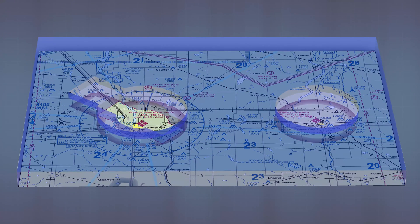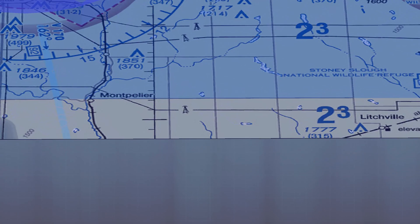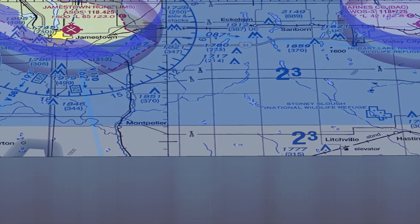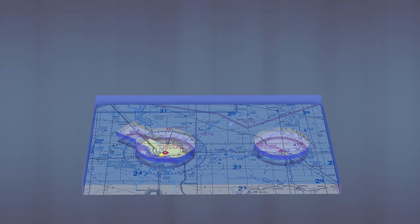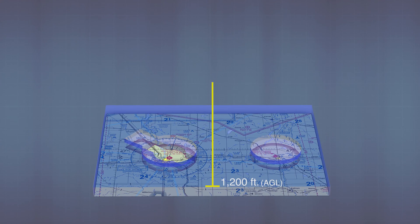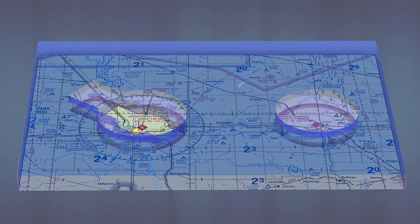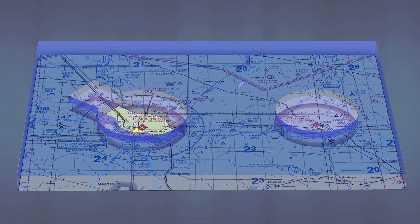Class E also exists between all other airspaces. So we have class G from the surface up to 1,200 feet, and then class E up to the next overlaying airspace. If there is no B, C, or D airspace over that area, then class E goes all the way up to class A at 18,000 feet. Everything that isn't class G is class E — everything that isn't covered in blue is class E up to 18,000 feet.